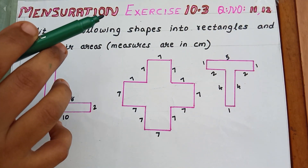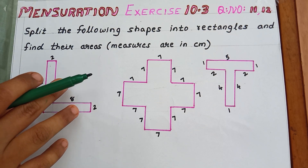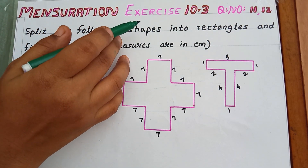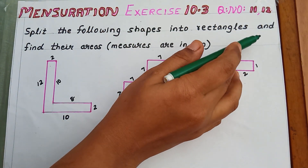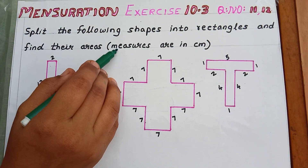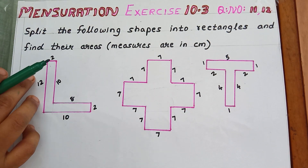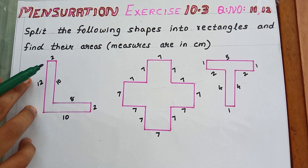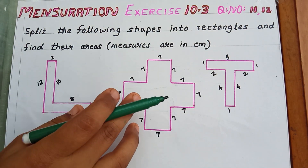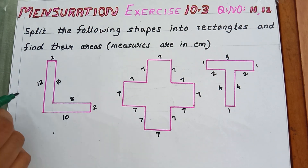These are the last two questions of this exercise and then the chapter will be over. Split the following shapes into rectangles and find their area — measures are given in cm. They have given us three shapes and we have to find the area of each shape.